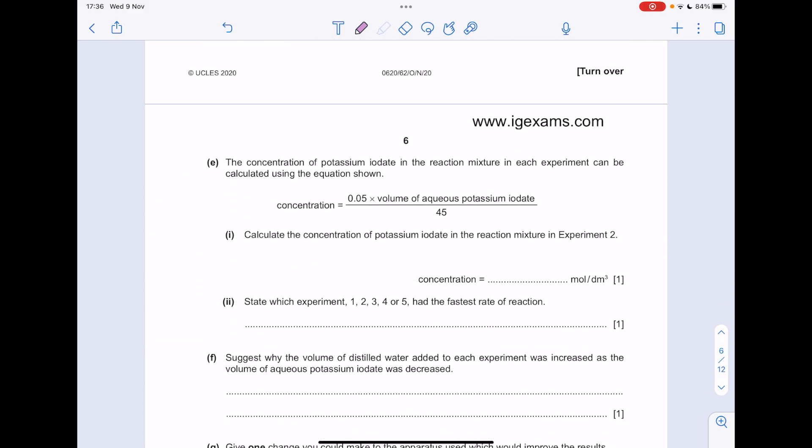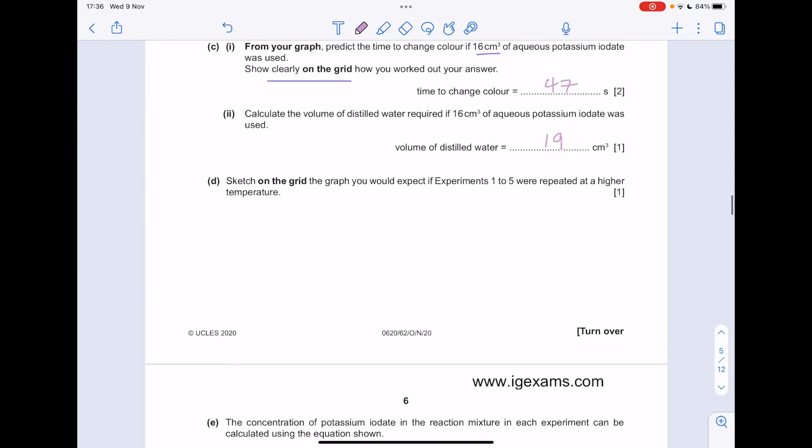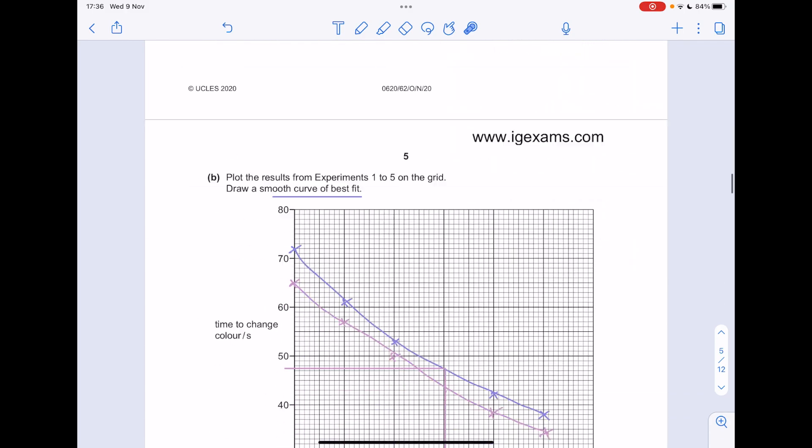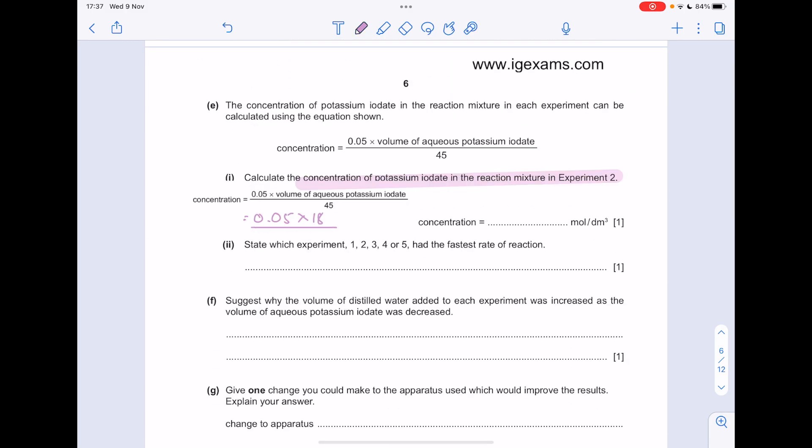The concentration of potassium iodate in the reaction mixture in each experiment can be calculated using this equation. Calculate the concentration of potassium iodate used in the reaction mixture in experiment 2. Let's steal that. So what's our volume of potassium iodate in experiment 2? Here's experiment 2. The volume was 18. Divide that by 45. Plug that into your calculator to get a value of 0.02.